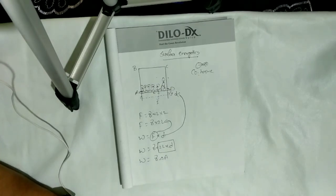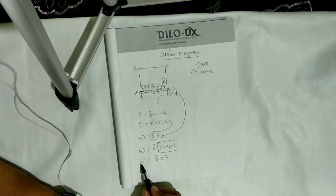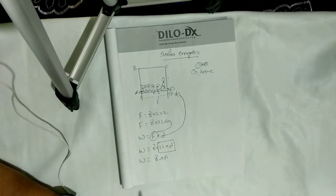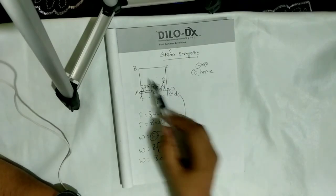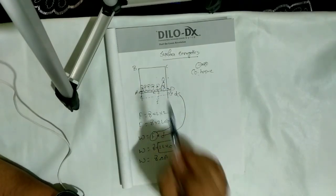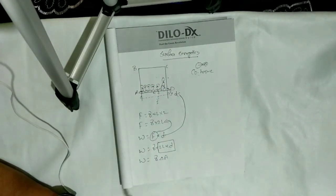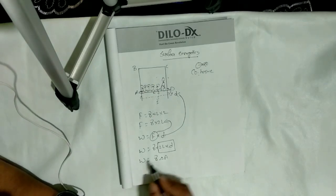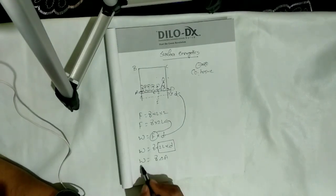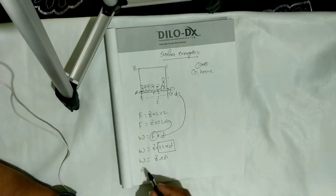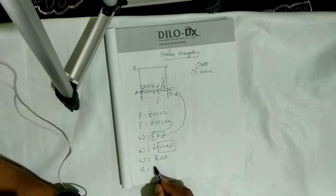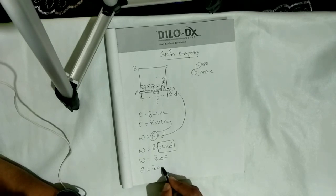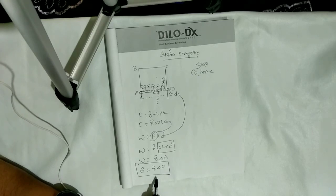Length times displacement can be written as change in area. So work done equals surface tension times change in area. Since work done equals surface energy, we write: G = surface tension × change in area. This is the surface energetics equation.